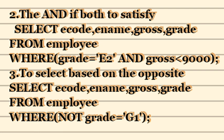The second logical operator is AND. The AND condition is used to satisfy both conditions — on the left-hand side as well as the right-hand side. Using the same employee table: WHERE grade equals 'E2' AND gross is less than 9000. This means only employees where the grade is E2 AND the gross salary is less than 9000 will be displayed.